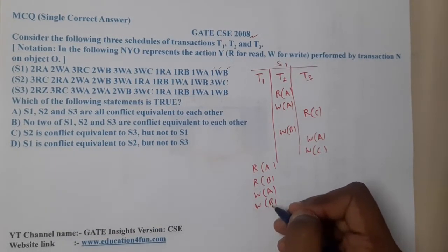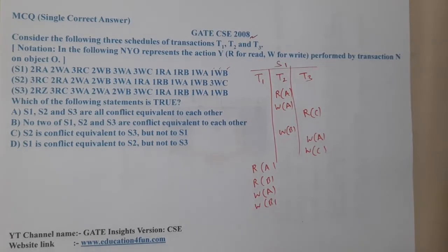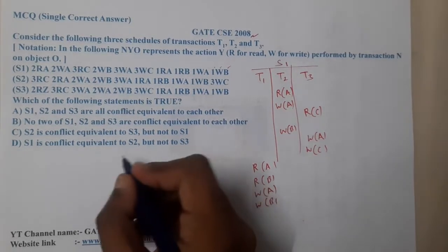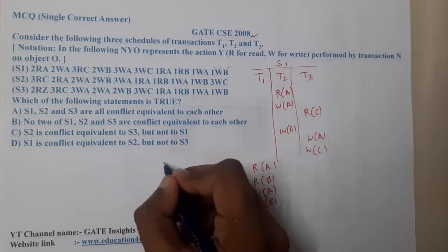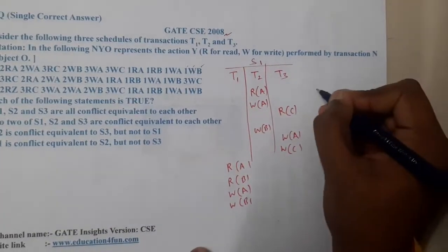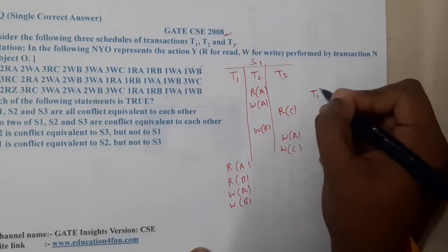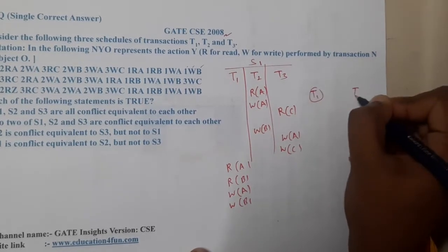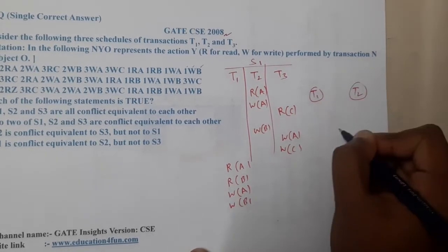Now let us check the serializability — whether it is possible or not. Let us draw the precedence graph diagram with nodes T1, T2, and T3.